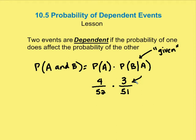Now, if I didn't select an ace in the first round, then the probability of B was going to be 4 out of 51 and not 3 out of 51.